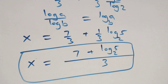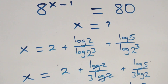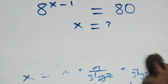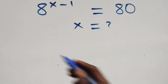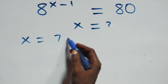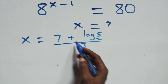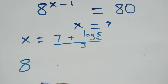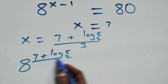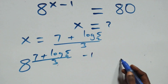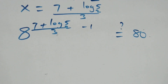Let's check whether this satisfies the given problem. We substitute x equals (7 + log₂5) / 3 back in. What we have becomes 8 raised to power (7 + log₂5)/3, minus 1, equals 80. We express 8 as 2 raised to power 3, which is raised to power (7 + log₂5)/3.